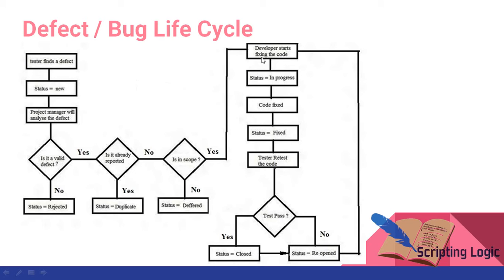Developer starts fixing the code where the bug is, then its status is in progress. When the code is fixed, that is bug is fixed, its status is code fixed. The bug status is fixed, then now it is given to the tester and tester retests the code.